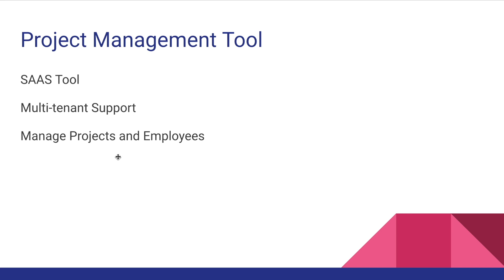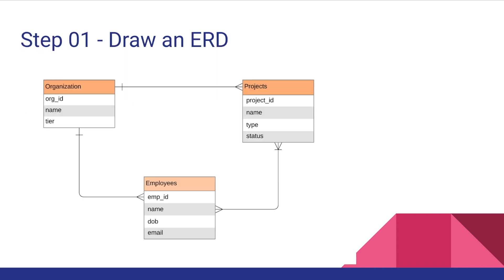To start data modeling for this application, let's begin with step number one: drawing an entity relationship diagram. There are three main entities in our application — organization, projects, and employees.